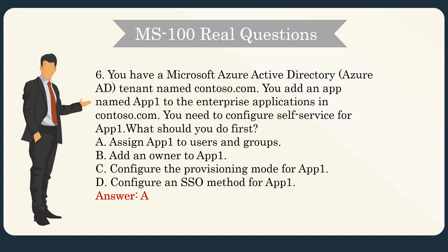Question 6. You have a Microsoft Azure Active Directory tenant named Contoso.com. You add an app named App1 to the enterprise applications in Contoso.com. You need to configure self-service for App1. What should you do first? A. Assign App1 to users and groups. B. Add an owner to App1. C. Configure the provisioning mode for App1. D. Configure an SSO method for App1. Answer: A.